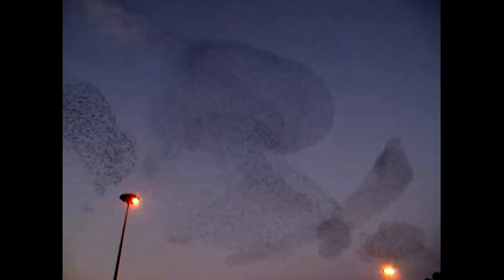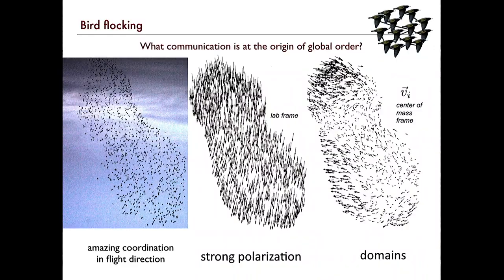This is the obligatory movie so that you're amazed and see that all these birds actually move together and form the domains Andrea mentioned. It's correlated motion and it looks amazing. From now on, we're going to go from snapshots to pictures where you see the velocity vectors drawn either in the lab frame or in the center of mass frame. In the center of mass frame, you see these domains emerging, and the question we've been asking is: what kind of communication between these birds is at the origin of global order?